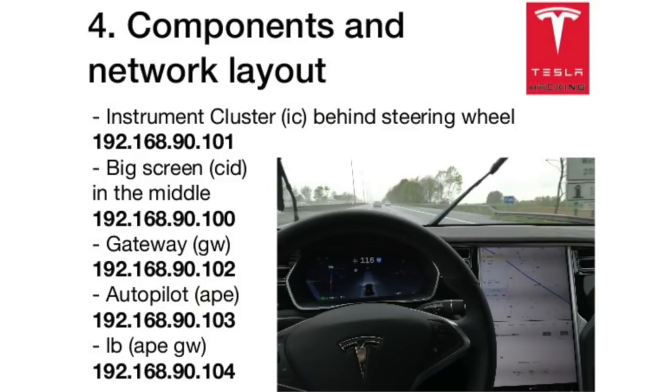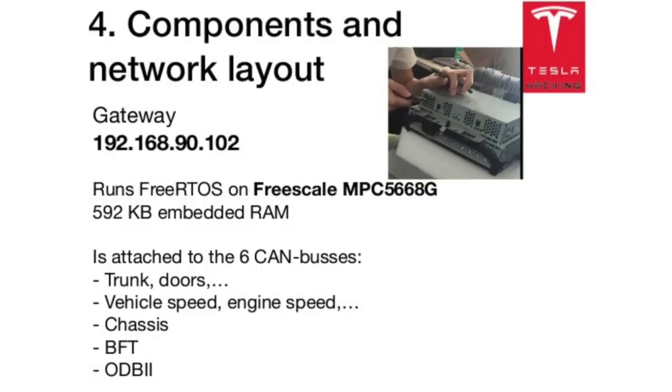How can you own a gadget and not have root access? So how many big computer systems are there in the Model X? There are quite a few. First, there is the instrument cluster behind the steering wheel. Then there is the big 17-inch screen, which is called the CID central display. And then there is the autopilot system. All three of these systems run Linux. There is also a gateway and a module for getting the internet connection. These gateway systems run on FreeRTOS, which is a small embedded operating system.